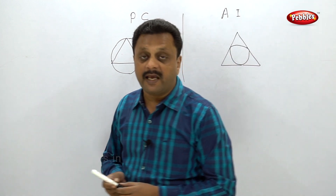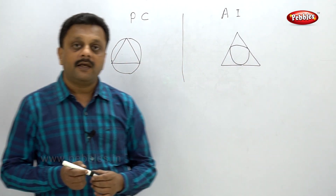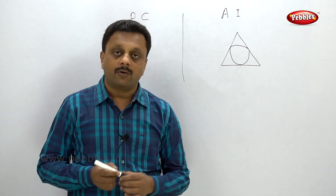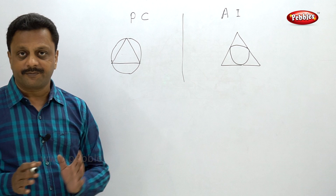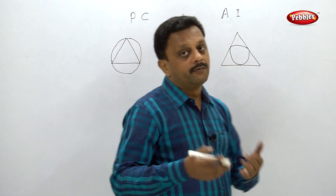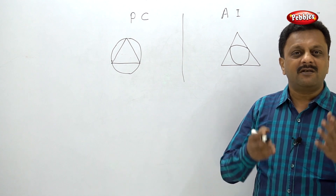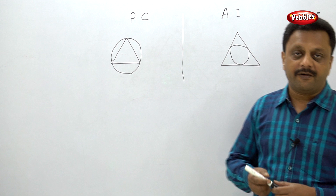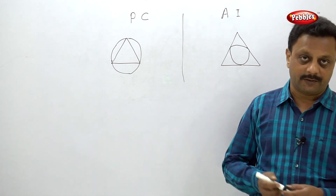Just remember the two words: PC — perpendicular bisector gives circum circle; AI — angle bisector gives in circle. That is what this topic is about. Now, how do we draw these? But first, let me tell you what is the use of this in your daily life — what is the practical use of this?